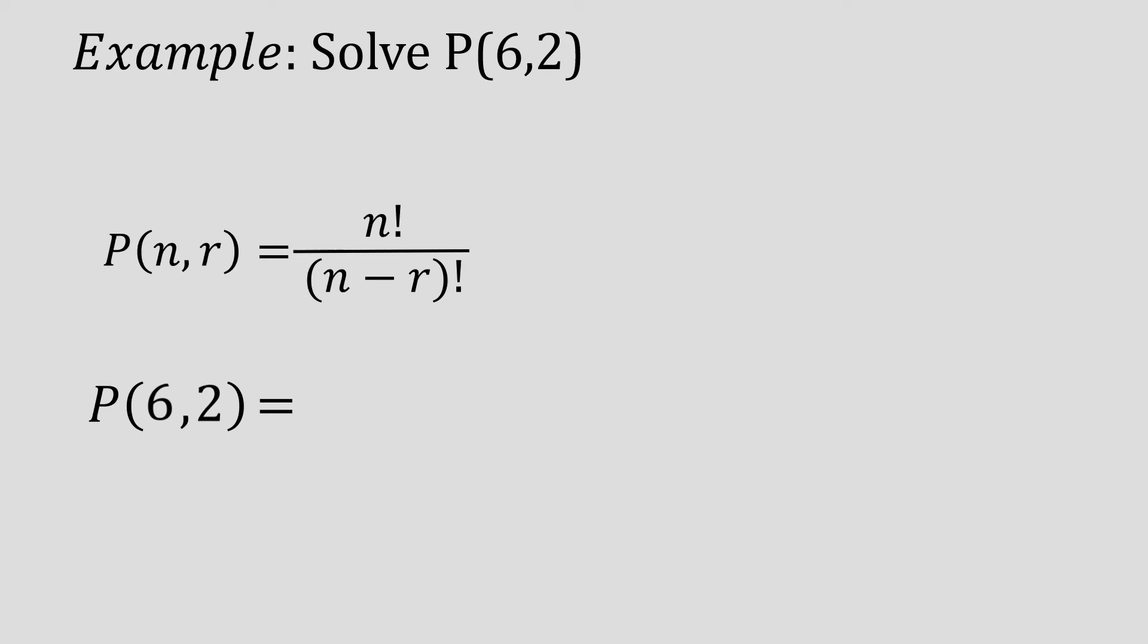You'll just substitute 6 and 2 in our formula. So, 6 factorial on the numerator and on the denominator, the difference between the two. So we have 6 minus 2 factorial. And then simplify, just copy 6 factorial first. And then on the denominator, subtract 6 and 2. So we have 4 factorial.